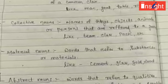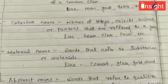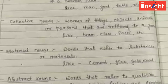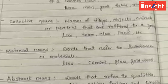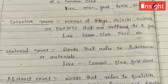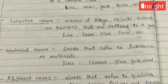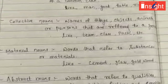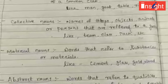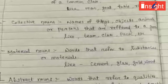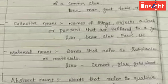Material noun refers to the substances or materials something is made of. For example, a table is a common noun, but the wood it is made from is a material noun. Other examples of material nouns are cement, iron, and copper.